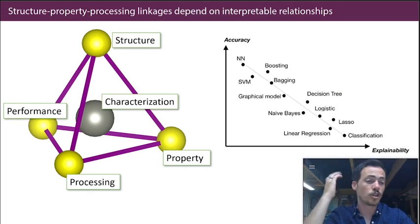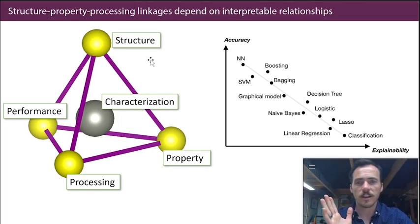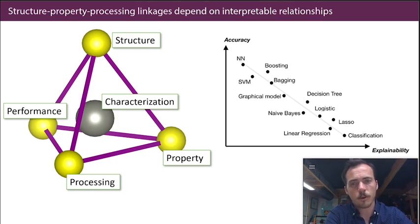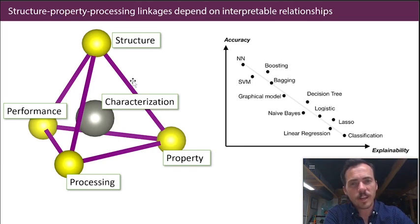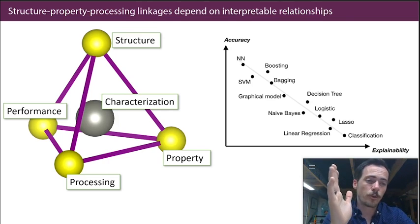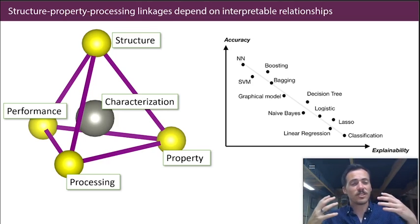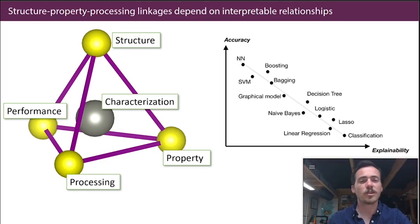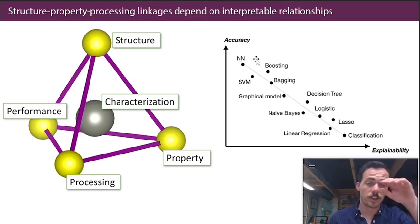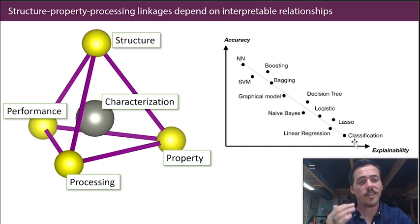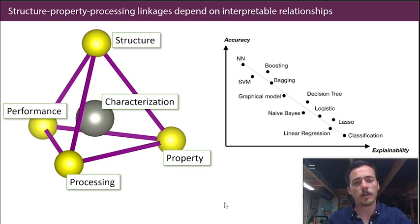The last topic is explainability and interpretability. Materials informatics finds linkages between structure, property, processing, and performance — and these structure-property-process linkages are the heart of materials science. If we don't understand those, that's pretty disappointing. Some machine learning algorithms take in a structure and output a property but never reveal the reason why — we never learn the mechanism or the physical or chemical insight. Deep learning approaches like neural networks and SVMs can be really accurate at the expense of explainability, while linear models might perform less well but be much more interpretable. Thinking about interpretability is important.